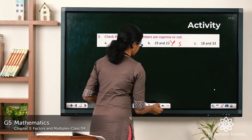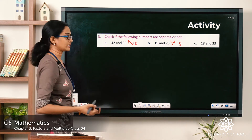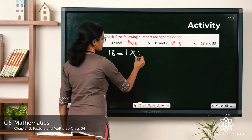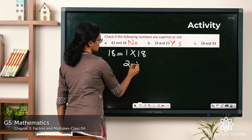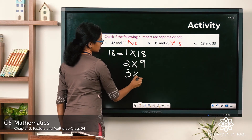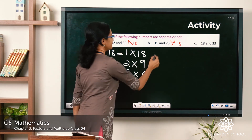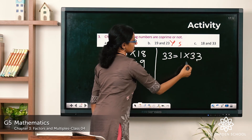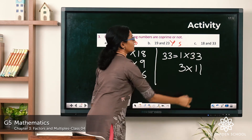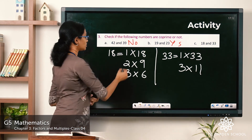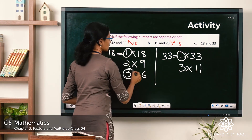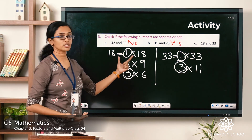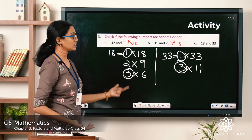Question c: 18 and 33. The factors of 18 are 1×18, 2×9, and 3×6. The factors of 33 are 1×33 and 3×11. Which factors are common to both? 1 is common, and 3 is also common. There are factors other than 1 which are common to 18 and 33, so are they co-prime? No, they are not co-prime numbers. Write No for question c.